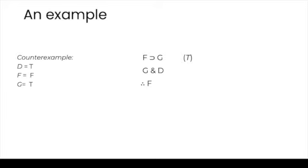Let's verify that this counterexample actually does what it's supposed to do. For the conditional F then G: F is false, therefore the conditional is true. G and D are each individually made true by the assignment, therefore their conjunction is true. And F is directly made false, therefore the conclusion is false. So this is a case in which the premises are true and the conclusion is false — this is a good counterexample, and the argument is indeed invalid.